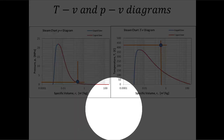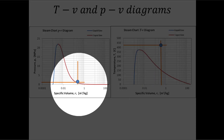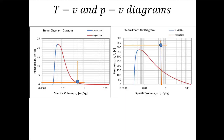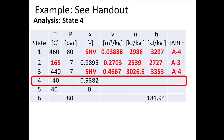I want to draw state three on both diagrams. I know the pressure and I know the specific volume, so I place a point on the PV diagram. I do the same on the TV diagram. Notice that even though the points are not in the same location on the two graphs, they're both in the same region — superheated vapor, above the red line and to the right of the critical point. If you ever get a point in different regions on the two graphs, something is definitely wrong.